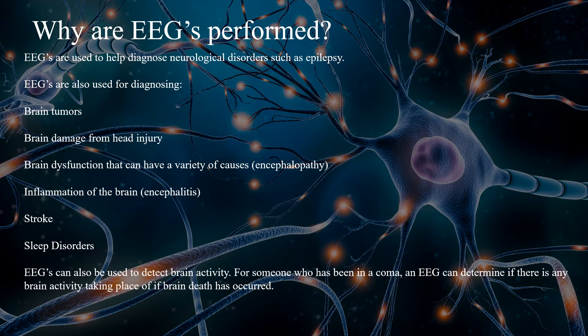EEGs are performed for many reasons. When it comes to epilepsy, EEGs are used to detect abnormal brain activity to diagnose epilepsy. EEGs can also be used to diagnose brain tumors, brain damage from a head injury, brain dysfunction due to a variety of causes, inflammation of the brain, stroke, and sleep disorders. EEGs can also be used to detect brain activity — for someone who has been in a coma, an EEG can determine if there is any brain activity taking place or if brain death has occurred.